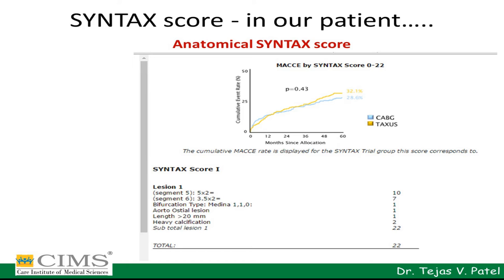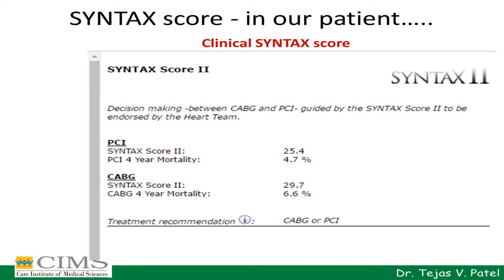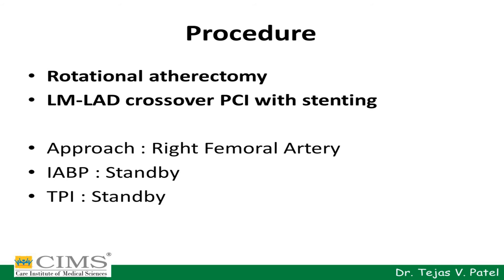Coming back to our patient: when we calculated the SYNTAX score, it was 22. Based on the trial evidence, bypass and angioplasty both have almost equal long-term outcomes for our patient. While calculating SYNTAX Score 2, the guideline recommendation also suggested that either CABG or angioplasty have almost equal long-term outcomes. Based on the patient's desire, we decided to go for angioplasty, and considering the significant calcific lesion in the LAD, we decided to use rotational atherectomy followed by left main to LAD crossover PCI stenting.